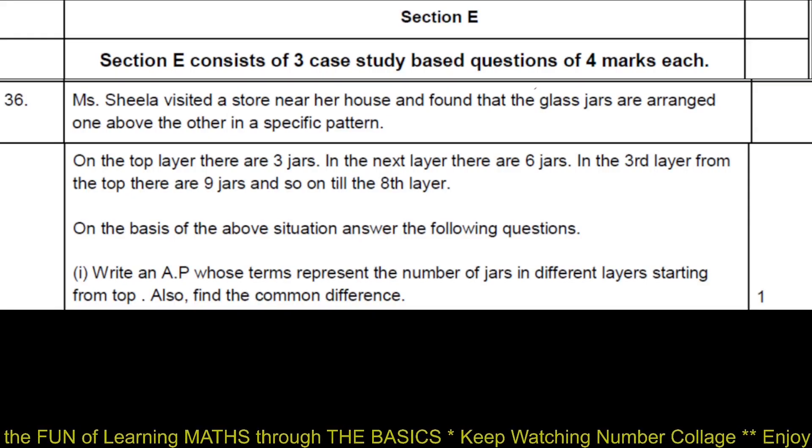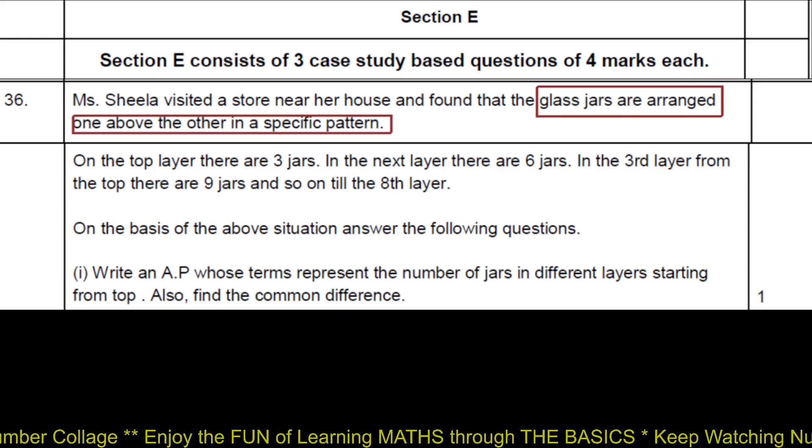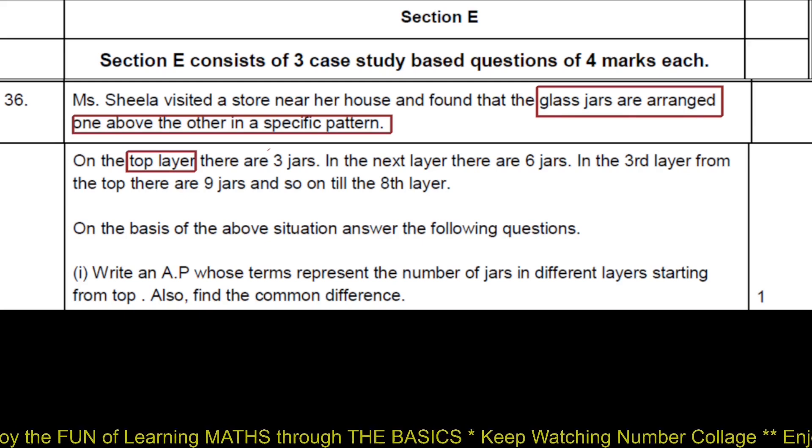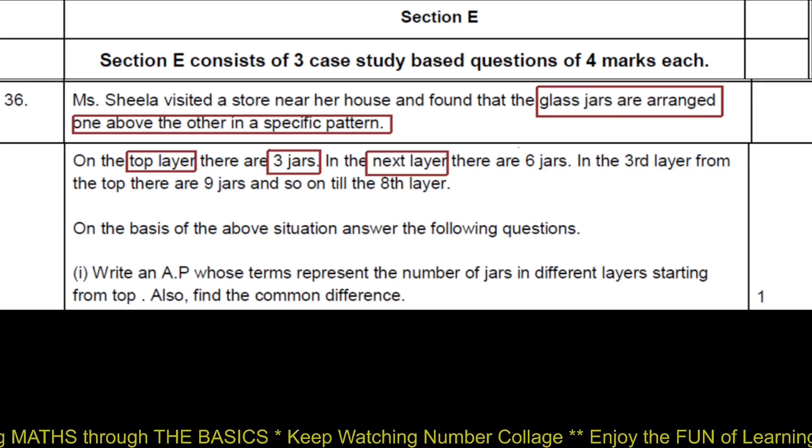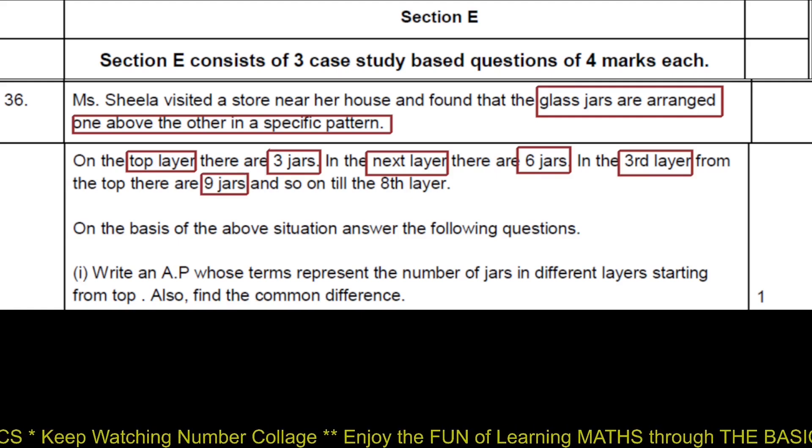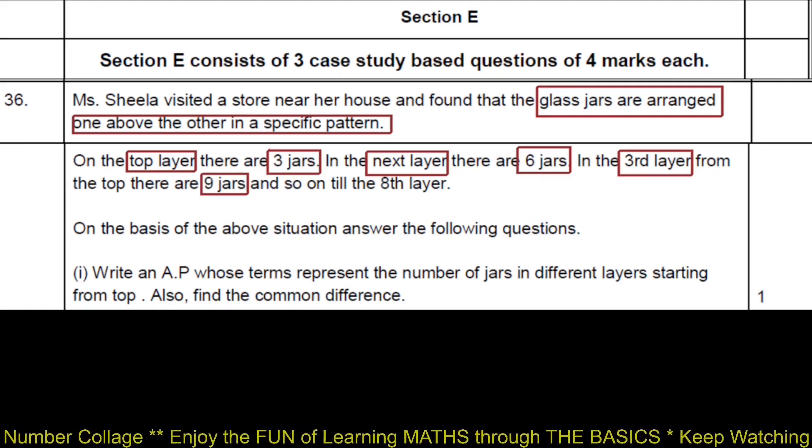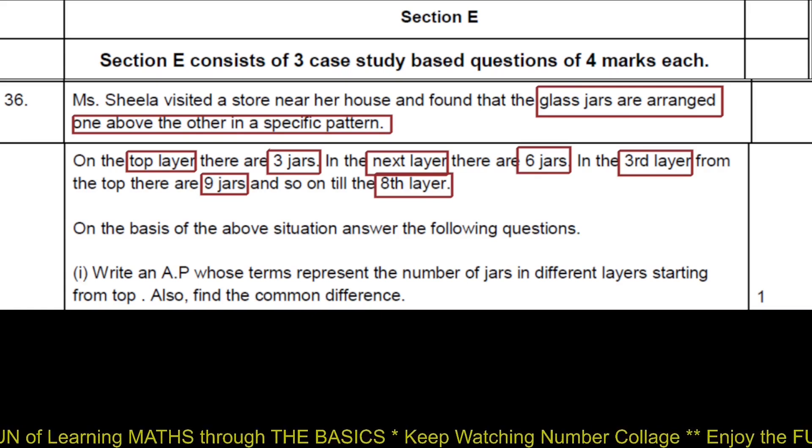The glass jars are arranged one above the other in a specific pattern. On the top layer there are 3 jars. In the next layer there are 6 jars. In the third layer from the top there are 9 jars, till the 8th layer. On the basis of above situation, answer the following questions.